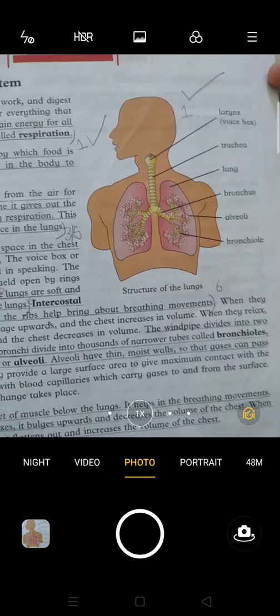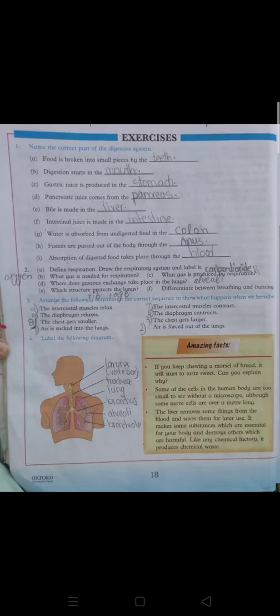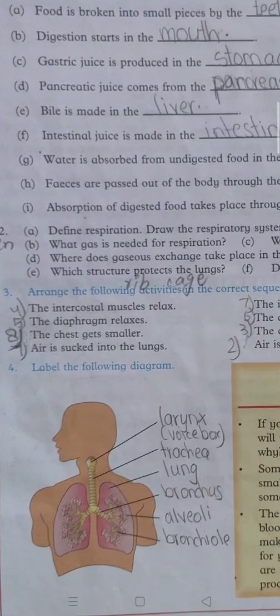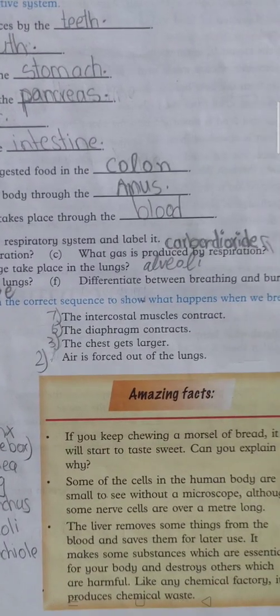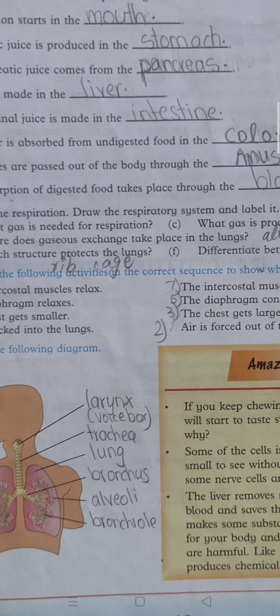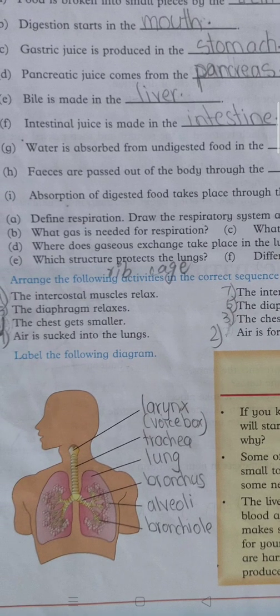Next question is: what gas is needed for respiration? Oxygen is needed for respiration. What gas is produced by respiration? As I told you in my previous lecture, I told you about an equation which was glucose plus oxygen equals carbon dioxide, energy, and water. Thus, which gas is produced? Carbon dioxide is produced by respiration.